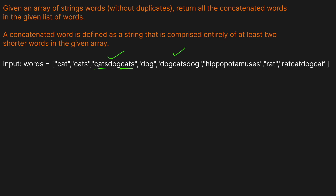Hippopotamuses — nothing we can really do there, we can't really break it up. Rat — single word, so we can't do much with it. Ratcatdogcat — well, we have 'rat', we have 'cat', we have 'dog', and we can reuse 'cat'. So this is also a solution.